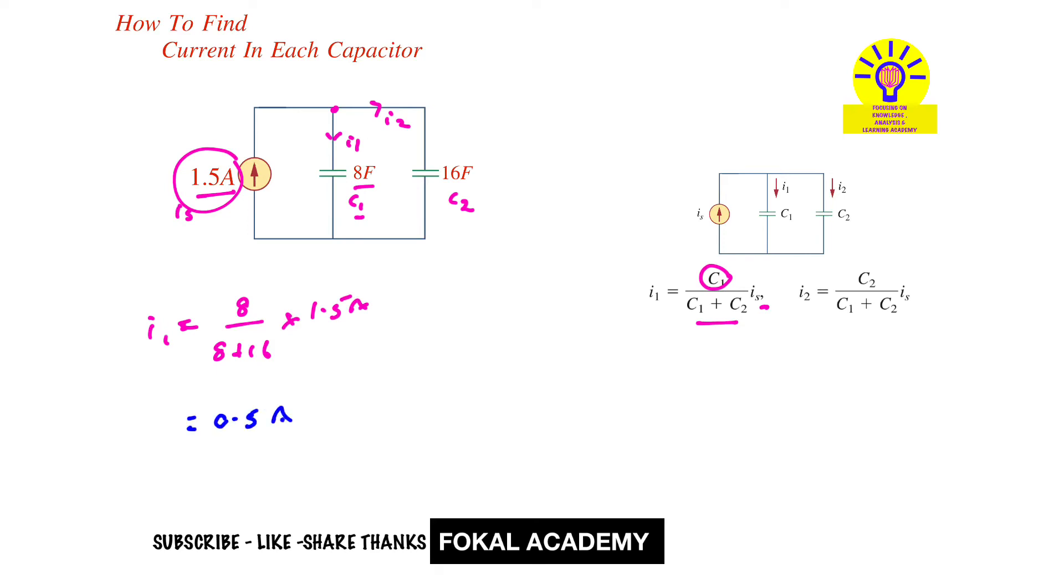Similarly, I2 is passing through C2 capacitor. That's 16 farad divided by sum of two capacitors, 8 farad plus 16 farad, times the total current source, 1.5 amperes. By simplifying this, we get 1 ampere. These are the currents which pass through the C1 and C2 capacitors.